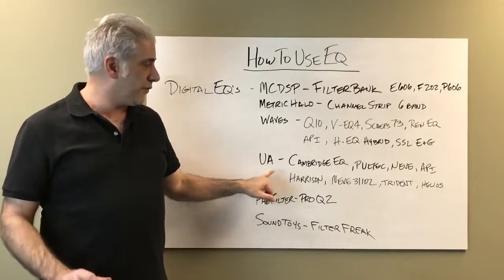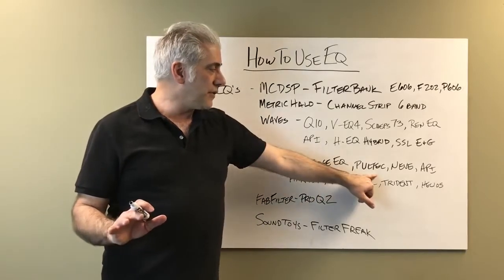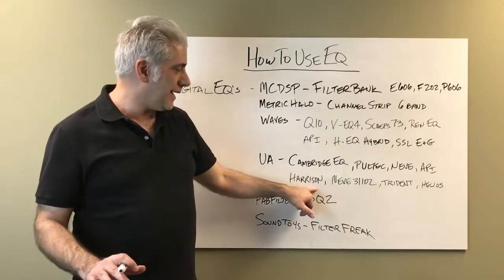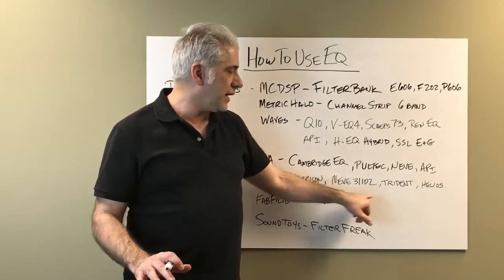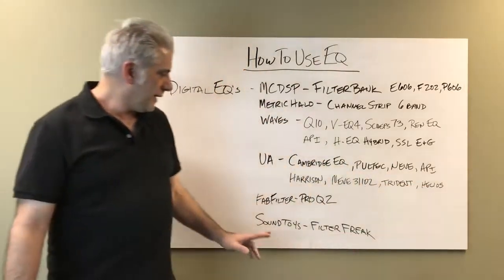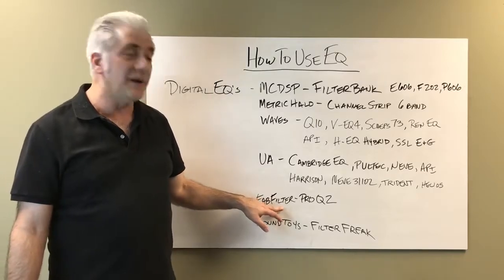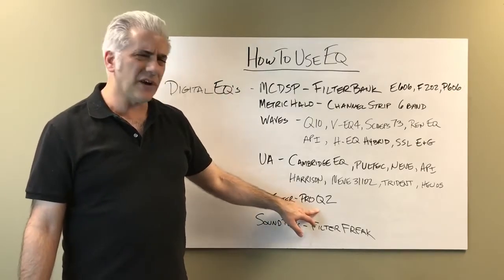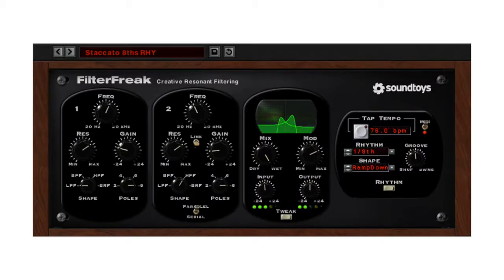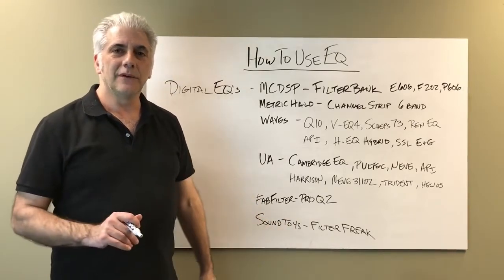Universal Audio makes many great EQs. The Cambridge EQ is one of my favorites — a parametric EQ with high and low shelf. They also make a Pultec EQ, Neve 1073 and 1081 EQs, API EQs, Harrison EQ, Neve 31102, Trident A Range, and Helios Type 69. FabFilter makes the Pro Q2, which is a fantastic EQ — FabFilter also makes great gate and compressor plugins. And of course Soundtoys Filter Freak, which has many different filtering effects and is a must-have for digital EQ.